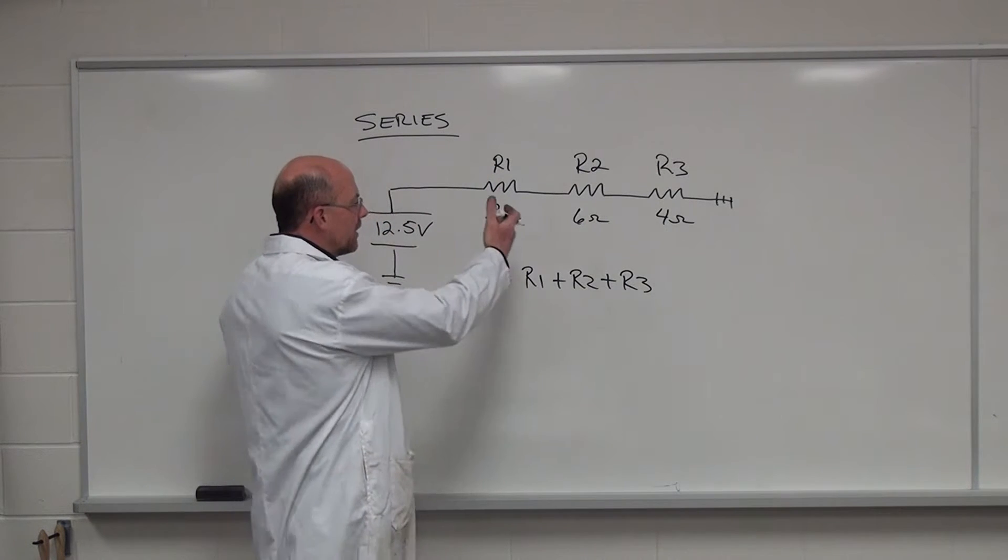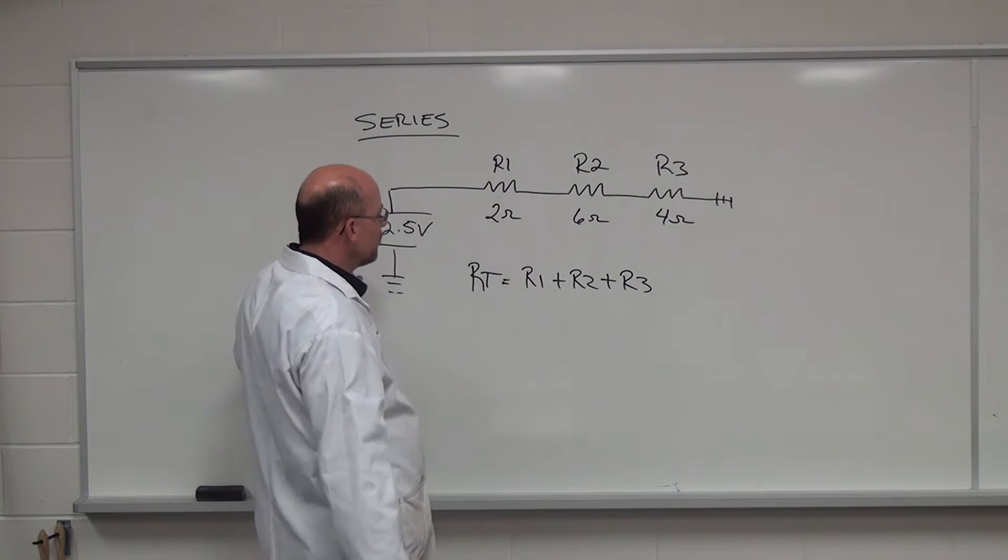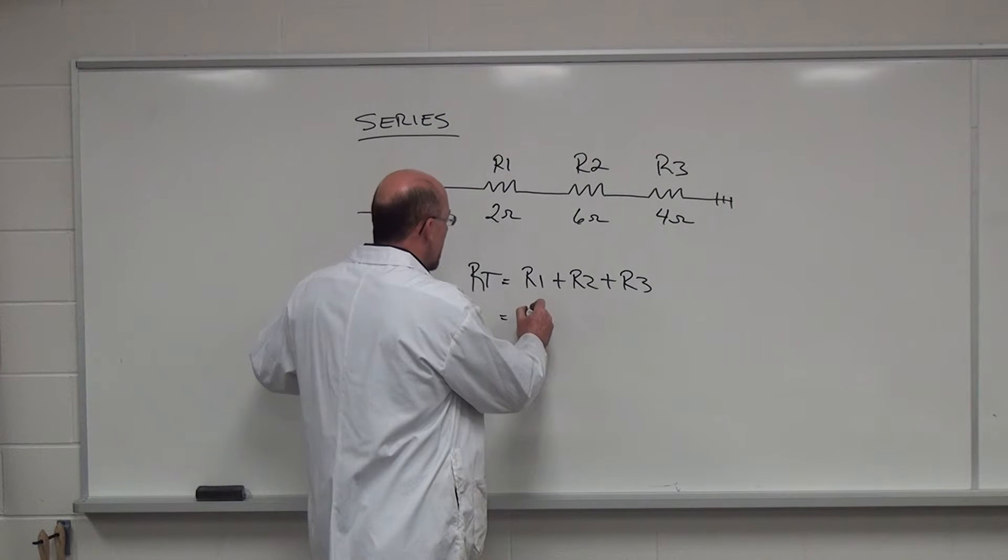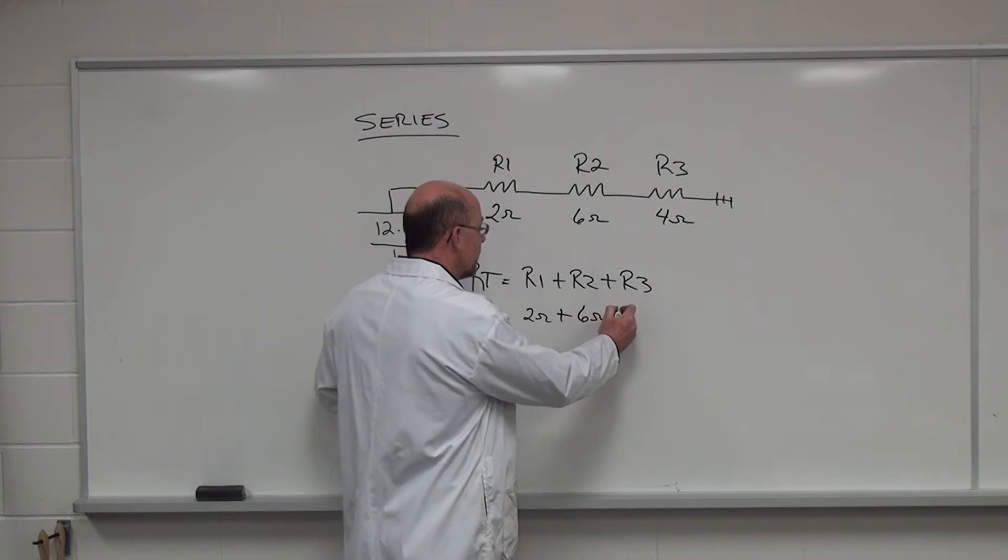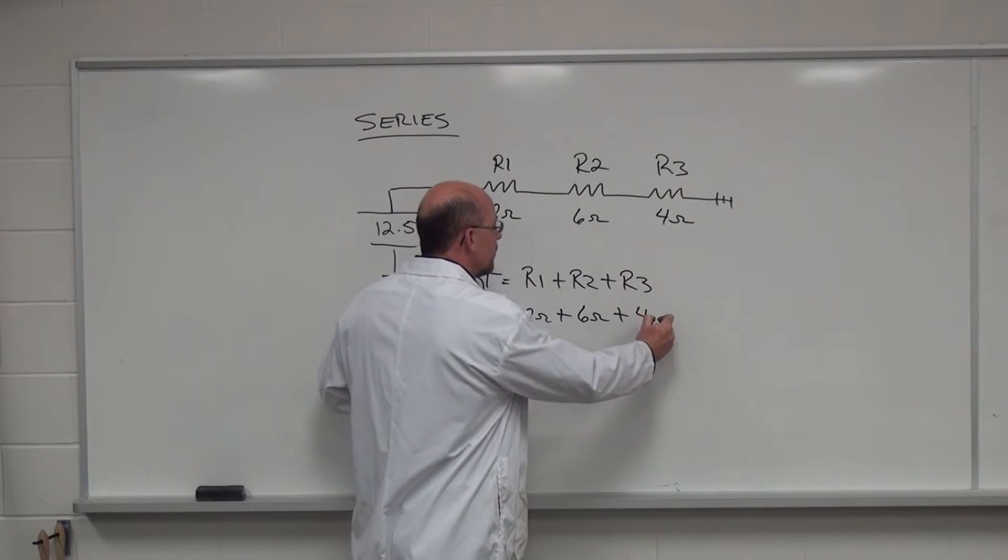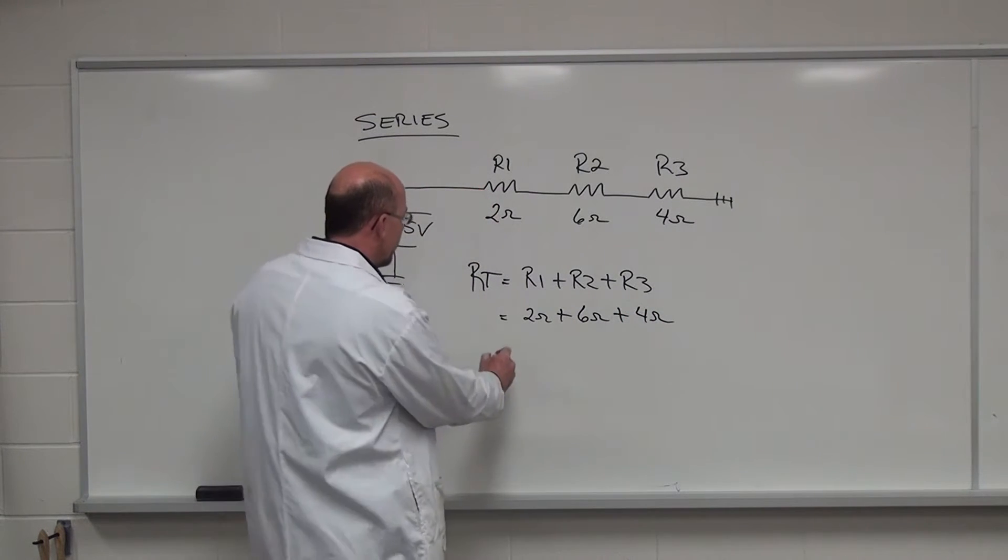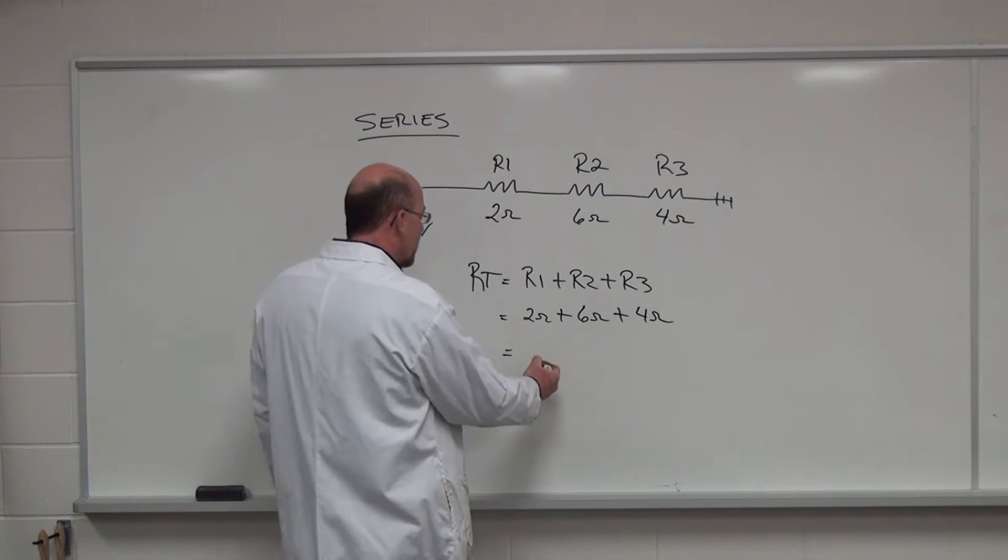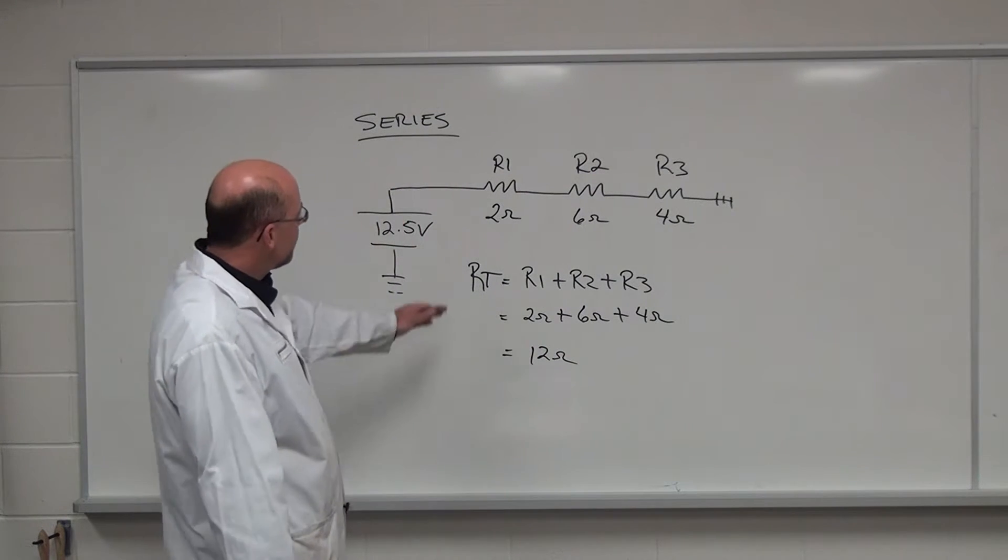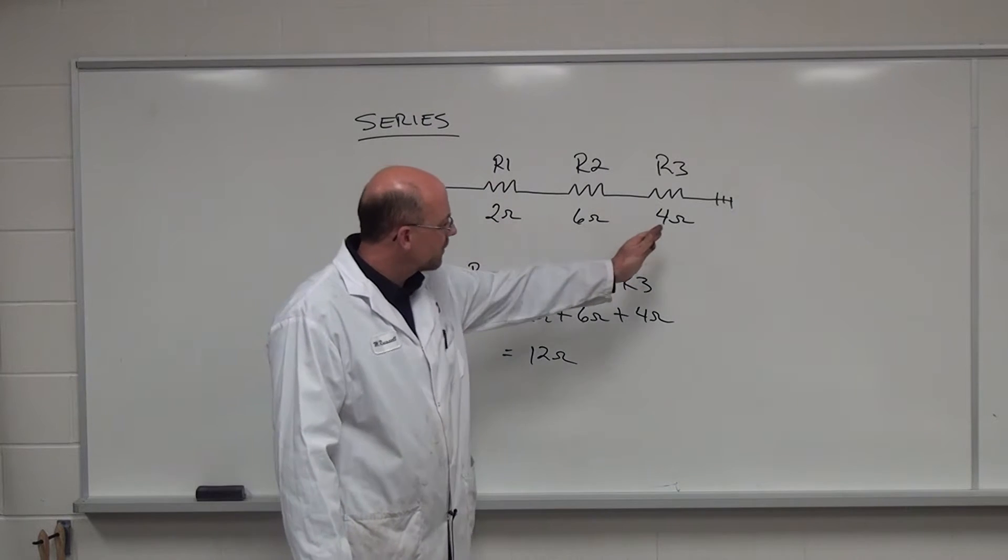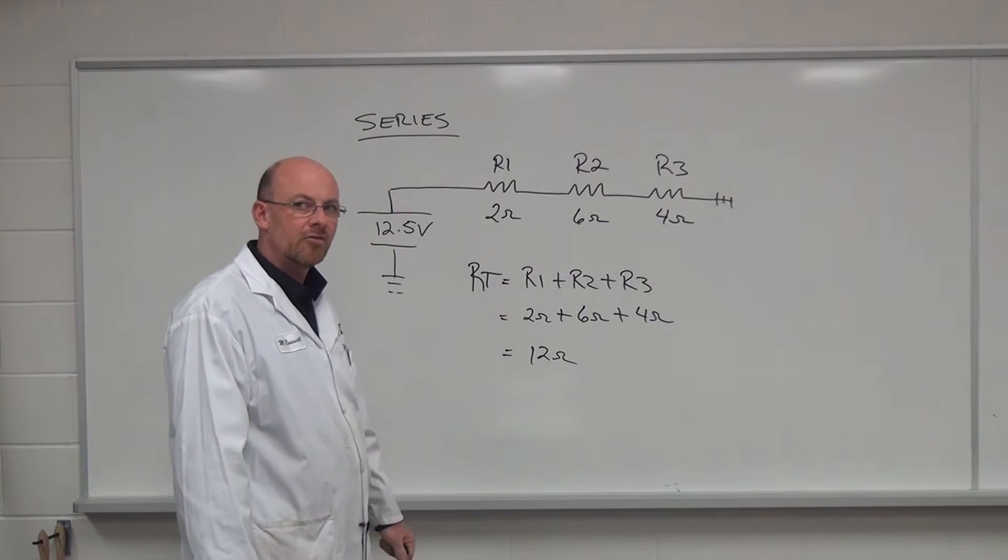And if I take a look at now putting in the values for each one, R1 is two ohms, R2 is six ohms, and R3 is four ohms. So if we add all these up together we end up with twelve ohms of resistance. And again you can see that it's cumulative of all the resistance values in the circuit.